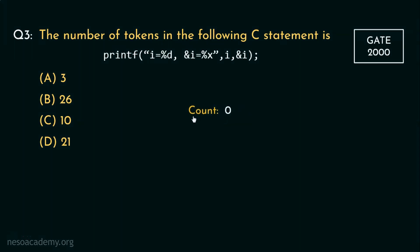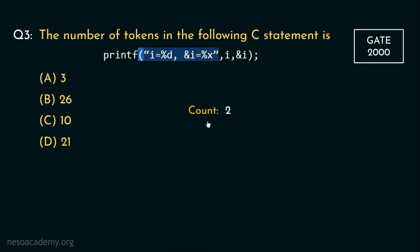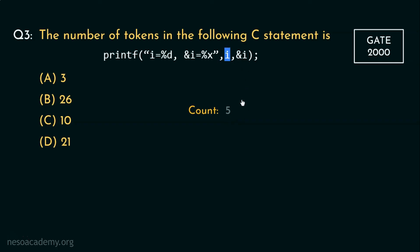Now let's start counting the tokens, initially keeping the count as 0. 'printf' is the first token — since it is the name of the function, it is an identifier, so count is now 1. Next we have the left parenthesis, which is a punctuated token, so count becomes 2. Then we have the entire string literal, so that's another token — count increases to 3. Next we encounter the argument separator comma, another punctuated token, count is 4. Then the identifier i increases our token count to 5. We again encounter the comma used as another argument separator, making the count 6.